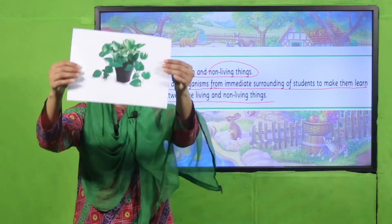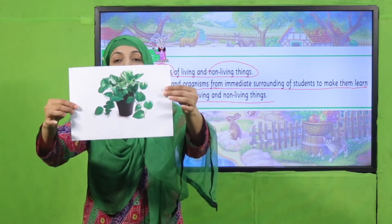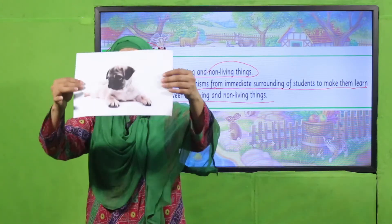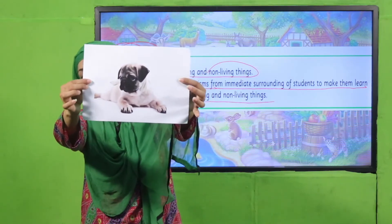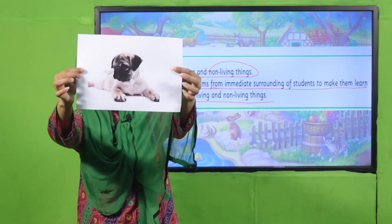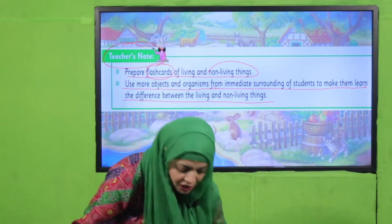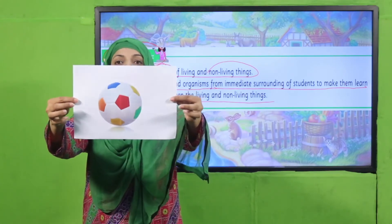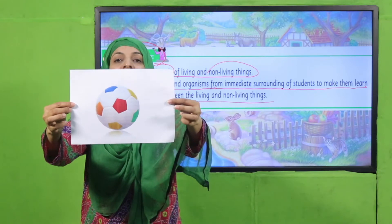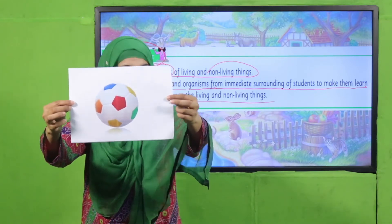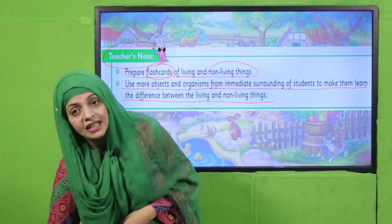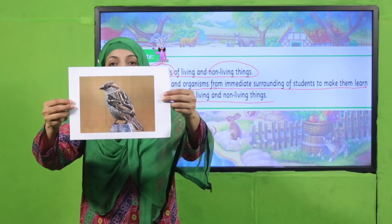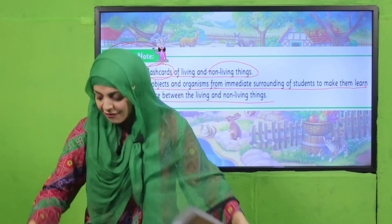Number one — this is a plant. Is it living or non-living? Very good, it is living. This is a dog. Is it living or non-living? Very good — living, because it eats, breathes, drinks, grows and has babies. So what is this? A football. Is it living or non-living? Non-living, because it does not grow, does not eat, does not drink, does not breathe. This is a sparrow — living or non-living? Living. Very good.